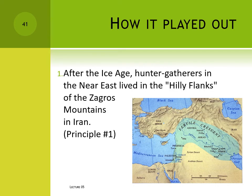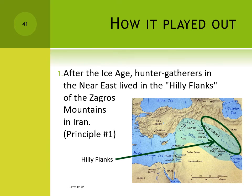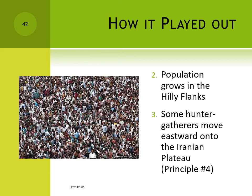He started by asking where in that region hunter-gatherers would want to live, and the answer was the hilly flanks of the Zagros Mountains. At the time, for environmental reasons, this was an extremely productive wild ecosystem. A hunter-gatherer could make his living very easily here, and according to principle one, easier is better. But once hunter-gatherers had settled in the hilly flanks, their population started to grow. After several centuries of population growth, some people began to feel crowded and chose to leave the hilly flanks and move onto the Iranian plateau.